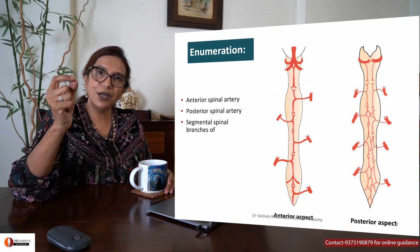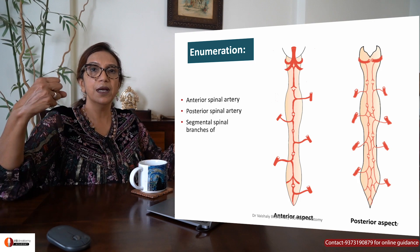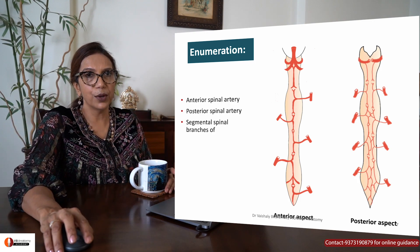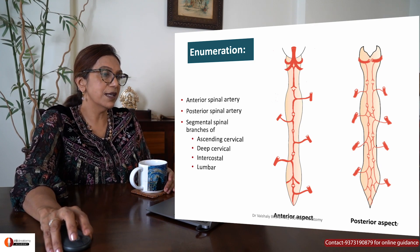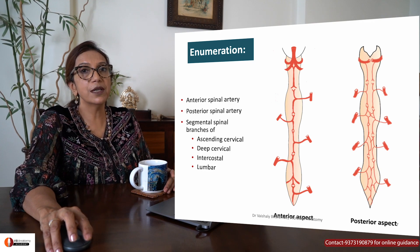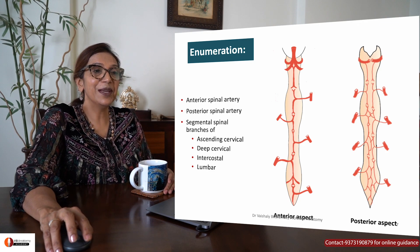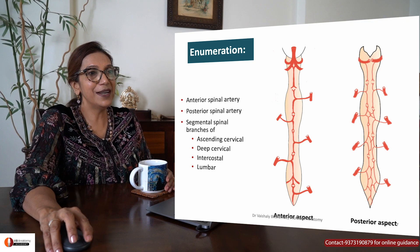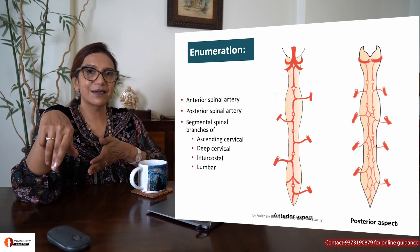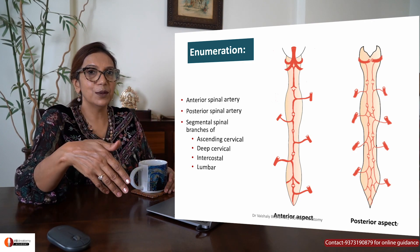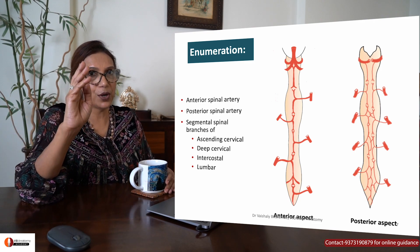Because these arteries are quite tiny, segmental arteries from all over the vertebral column come in and help to supply the spinal cord. The segmental arteries are: ascending cervical, deep cervical, intercostal, and lumbar — you can remember them with the mnemonic DIAL or ADIL. Do not forget the names of these four arteries.